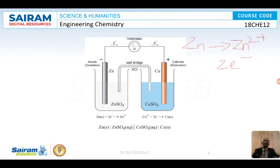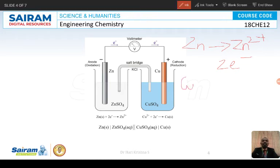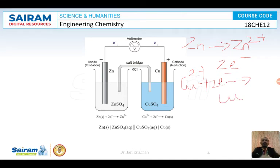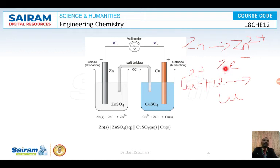At copper, Cu²⁺ accepts two electrons and is reduced to Cu: Cu²⁺ + 2e⁻ → Cu. So at zinc, oxidation occurs, and at copper, reduction occurs. In copper sulfate solution, Cu²⁺ and SO₄²⁻ are present; the Cu²⁺ accepts two electrons and gets reduced to Cu. Loss of electrons is called oxidation; gain of electrons is called reduction.